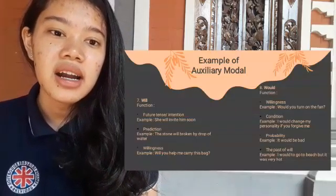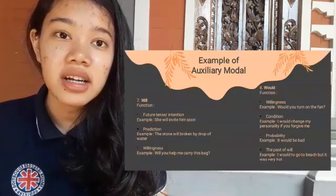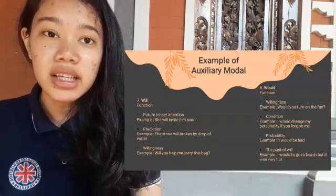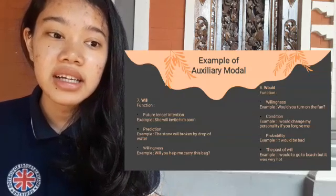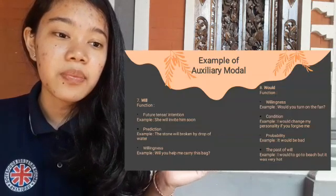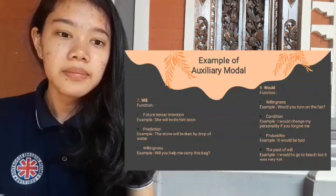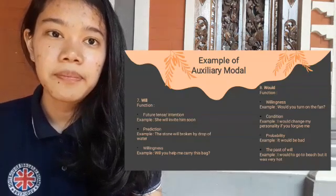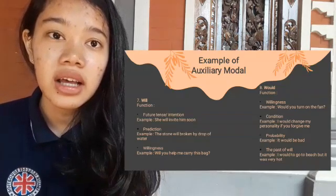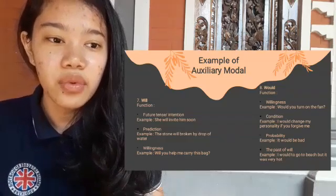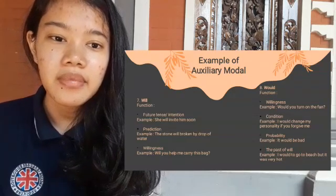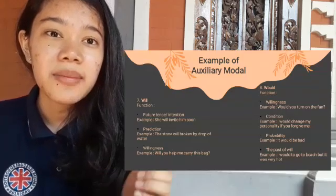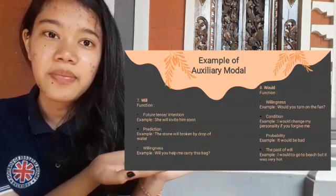Next is Will and Would. Will has the functions of future tense or intention, prediction, and willingness. Would has functions of probability and is the past form of Will. Will is the modal used in future time, and Would is the modal used in past time. You can read my samples in this PowerPoint.